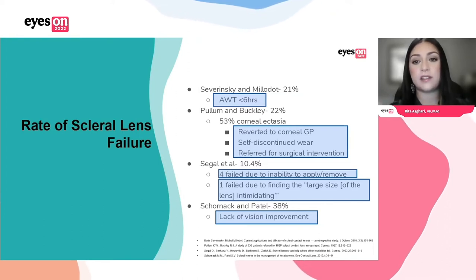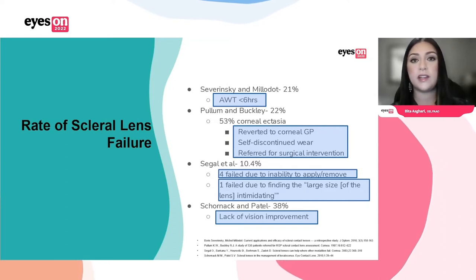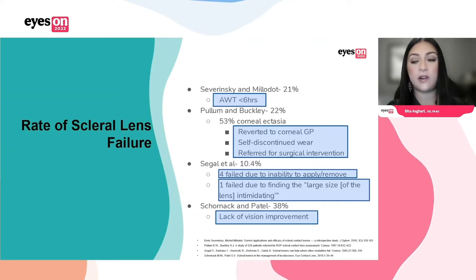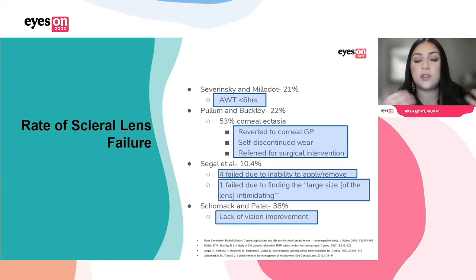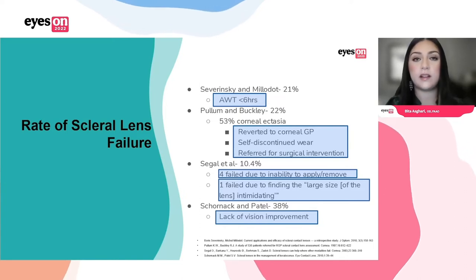These are all things that can either be determined at the time of the consultation visit — their motivation — or they need to be managed with application removal training. In other studies they either had lack of vision improvement or couldn't get the lens in and out. And this is a direct quote from one study: 'the large size of the lens was intimidating.' These are all workable things that could be addressed at the consultation visit with a good solid foundation.